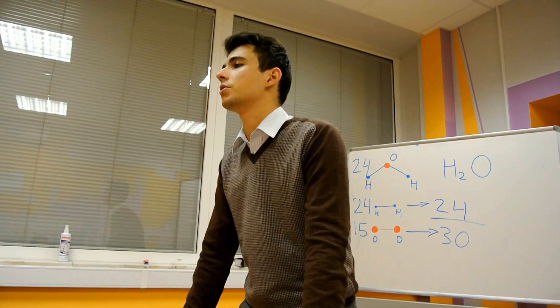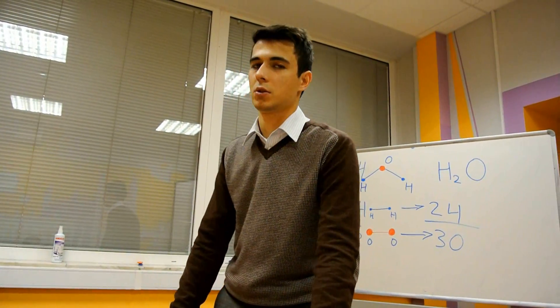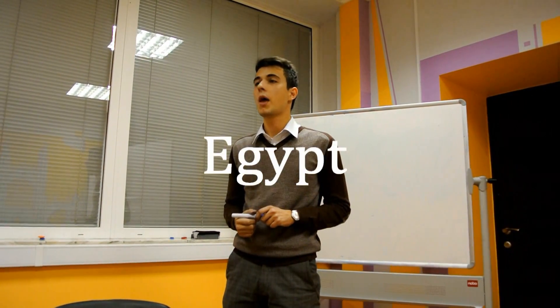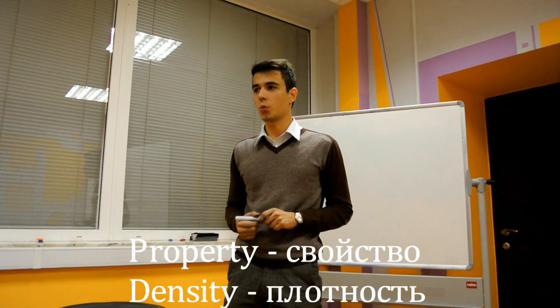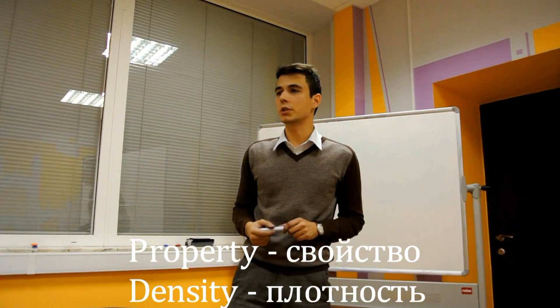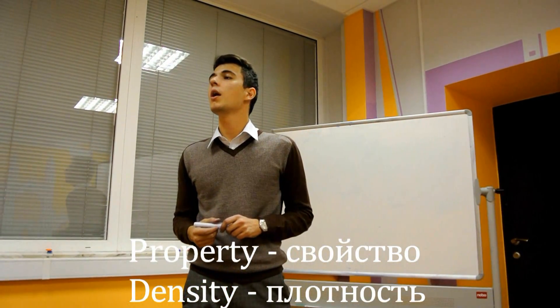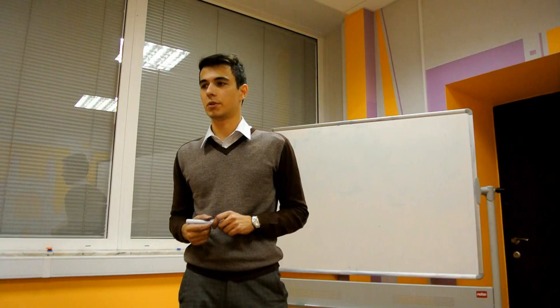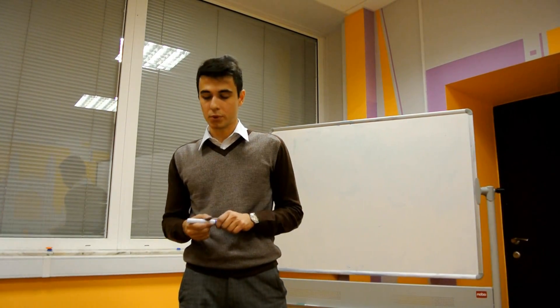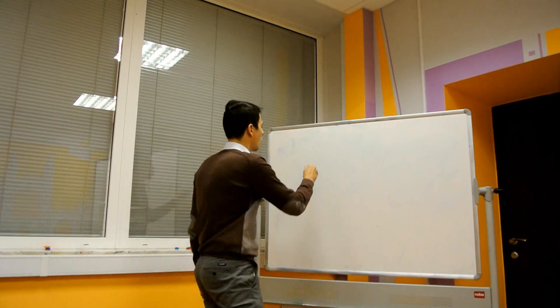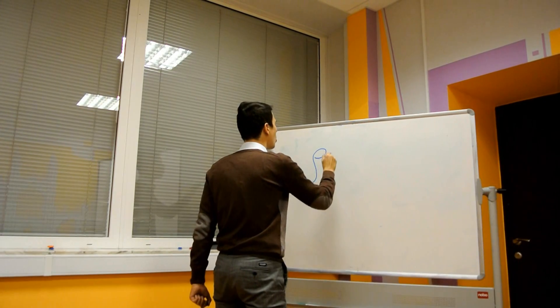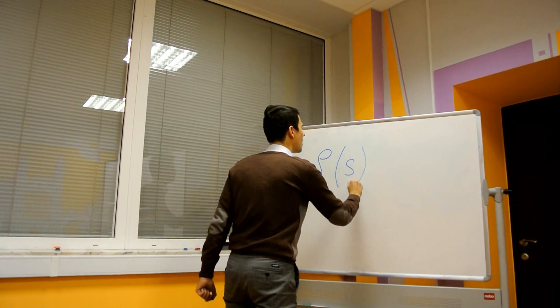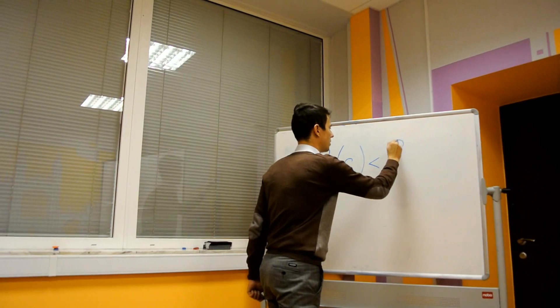Please write your answers on the sheets of paper and give them to the assistant. Thank you. The correct answer is Egypt. There is one more property of water I want to discuss. The fact is that water reaches its maximal density at plus 4 degrees centigrade. This results in a surprising fact: water has a lower density in its solid state than in its liquid state.